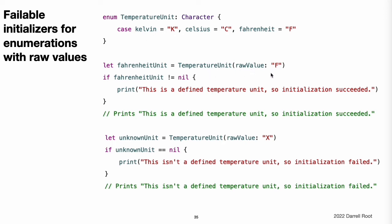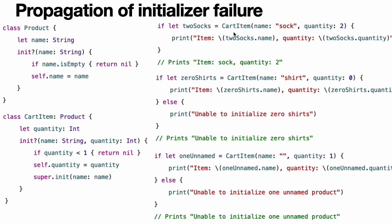If you create a CartItem instance with a non-empty name and a quantity of one or more, initialization succeeds. If you try to create a CartItem instance with a quantity value of zero, the CartItem initializer causes initialization to fail. Similarly, if you try to create a CartItem instance with an empty name value, the superclass Product initializer causes initialization to fail.